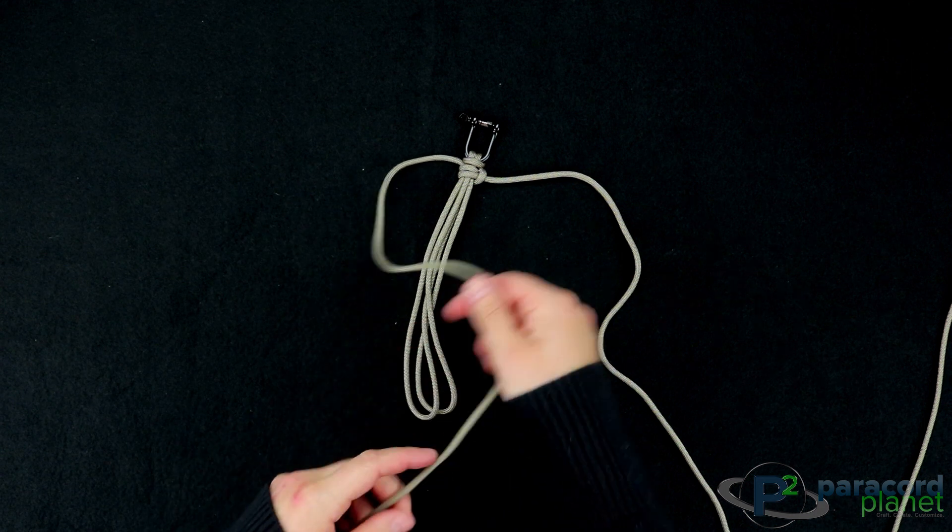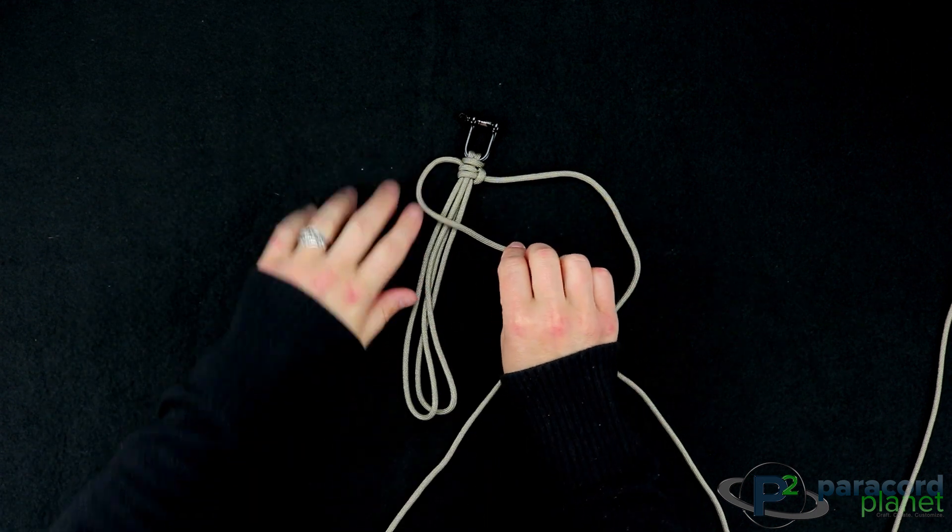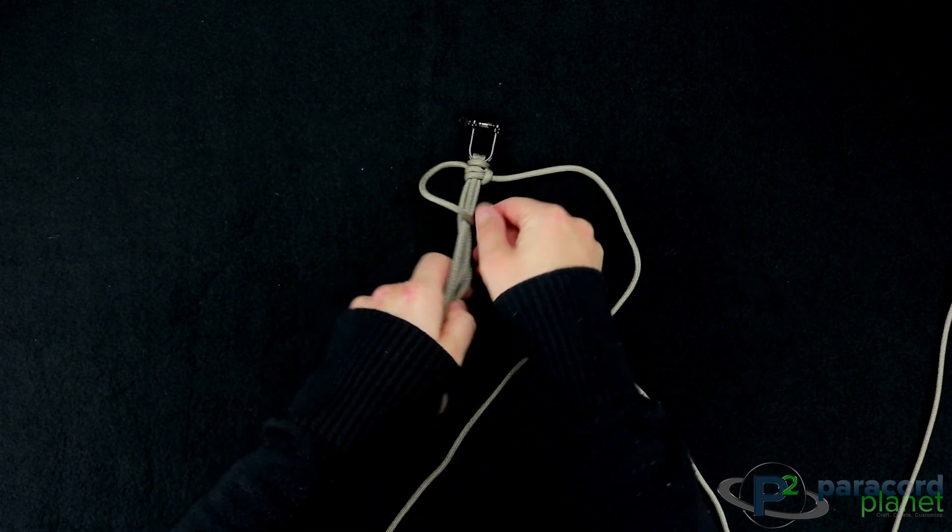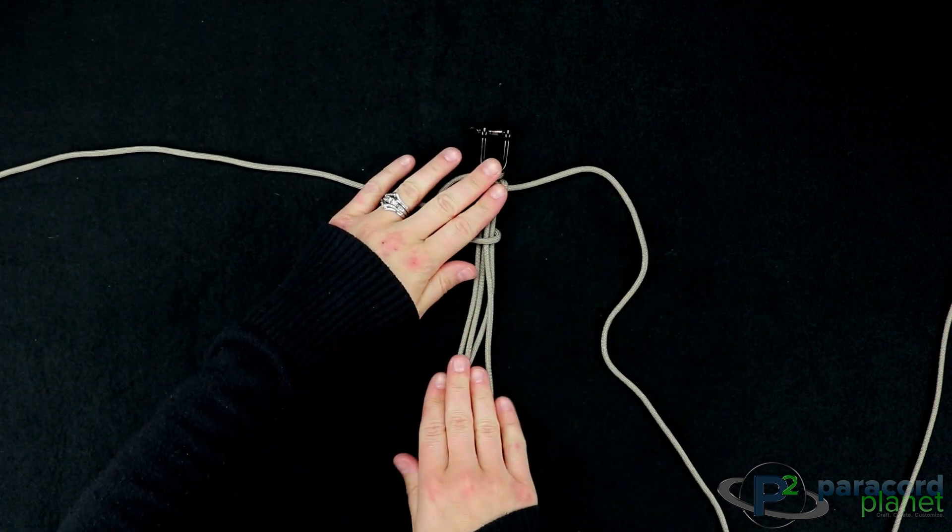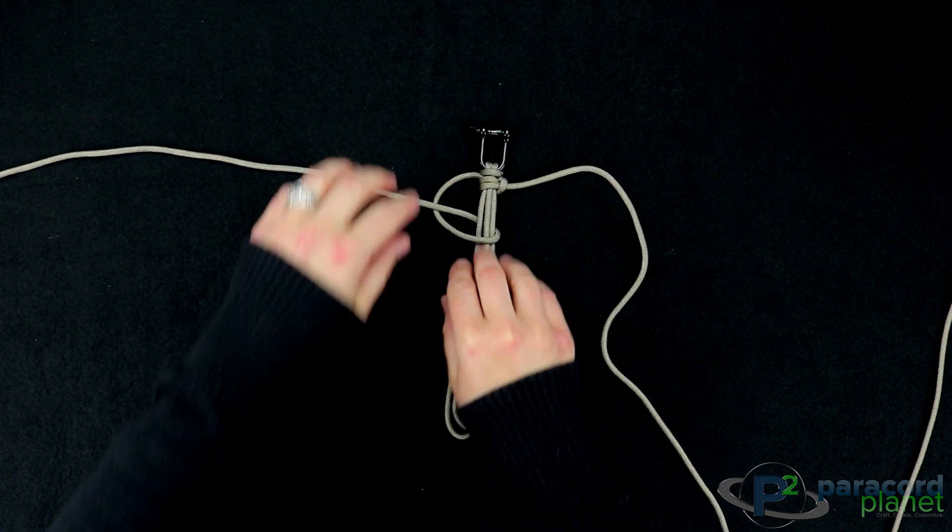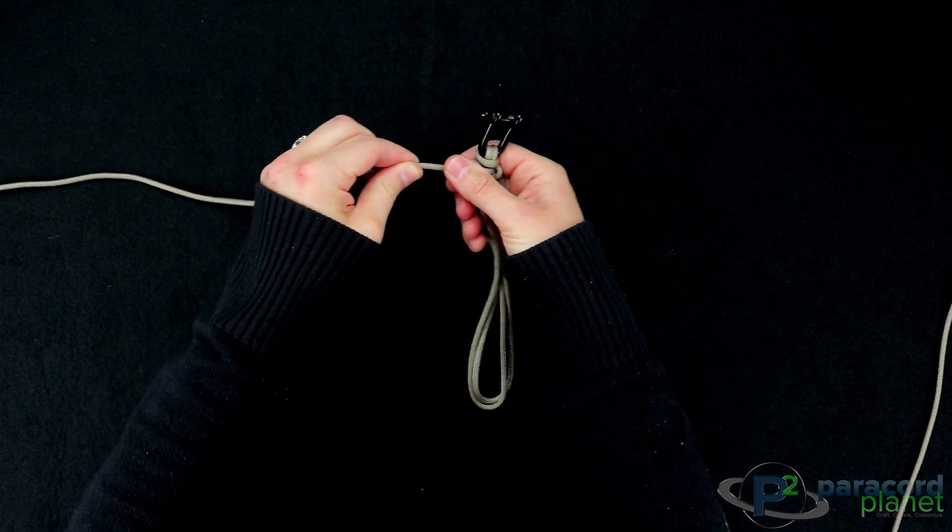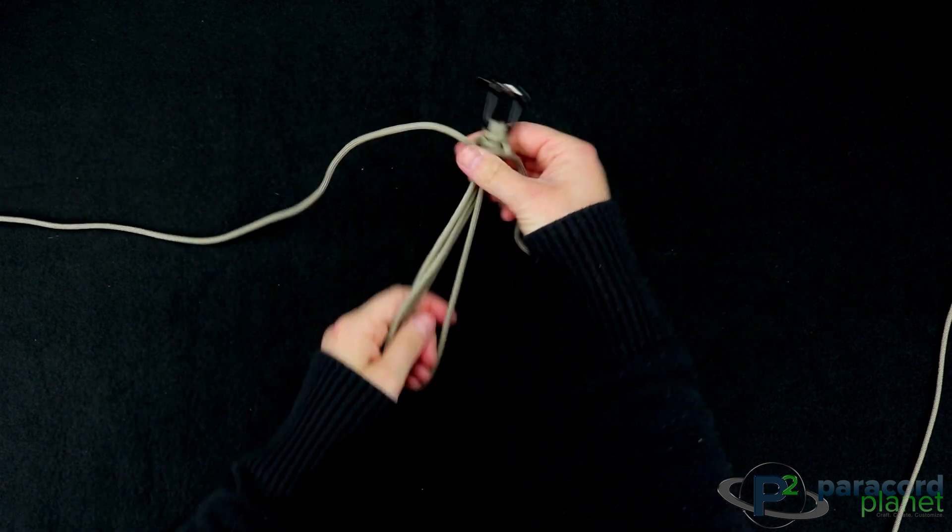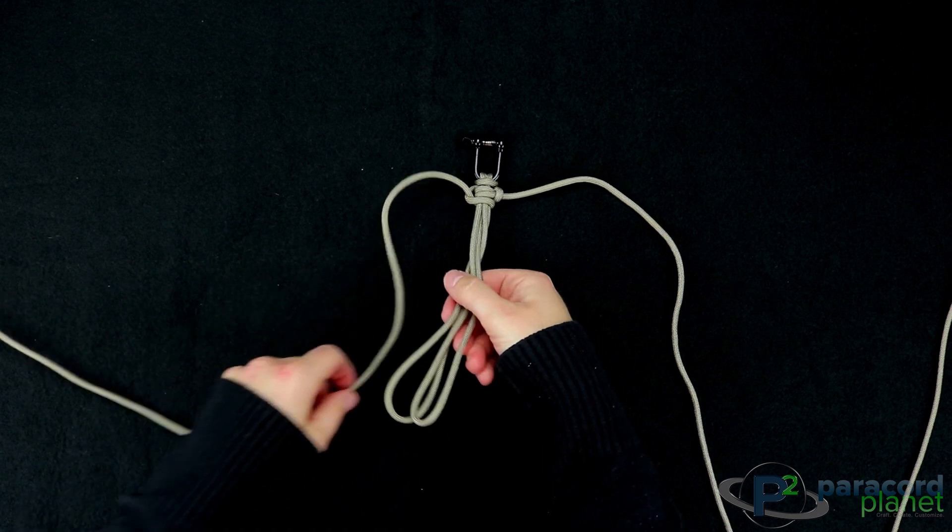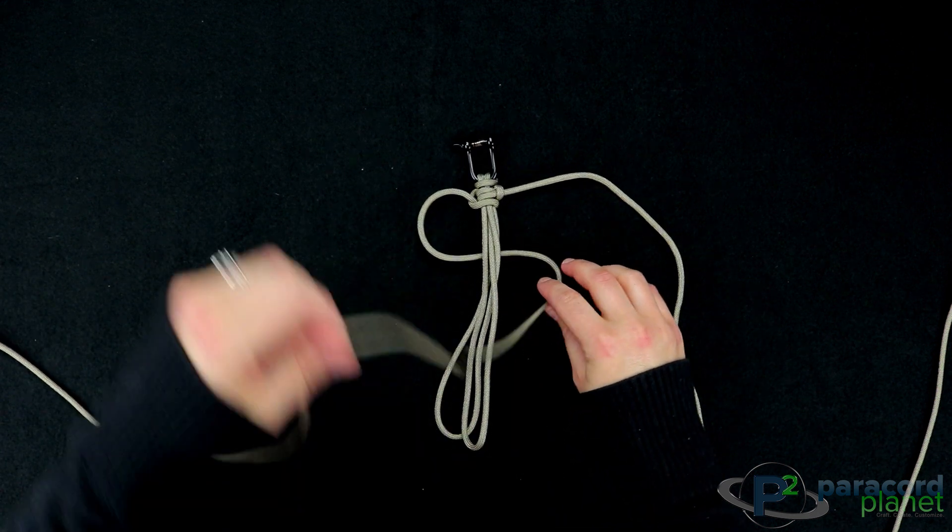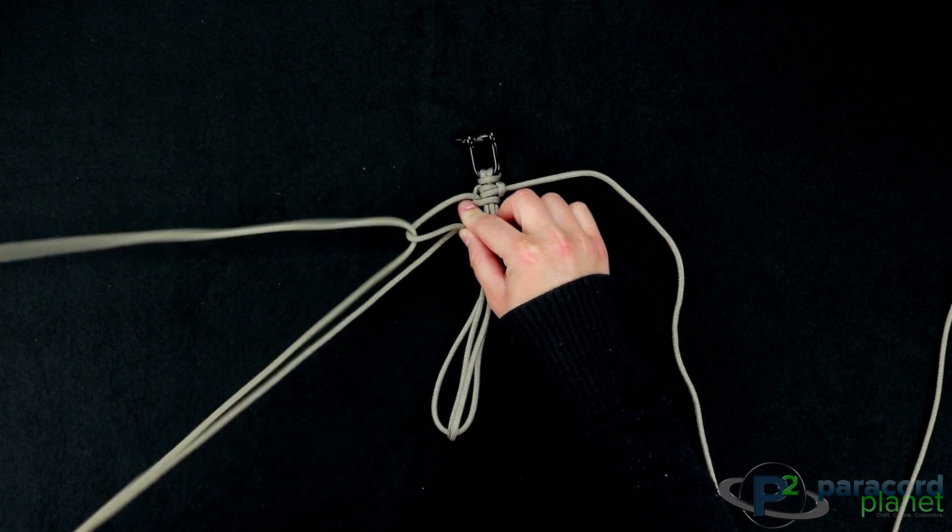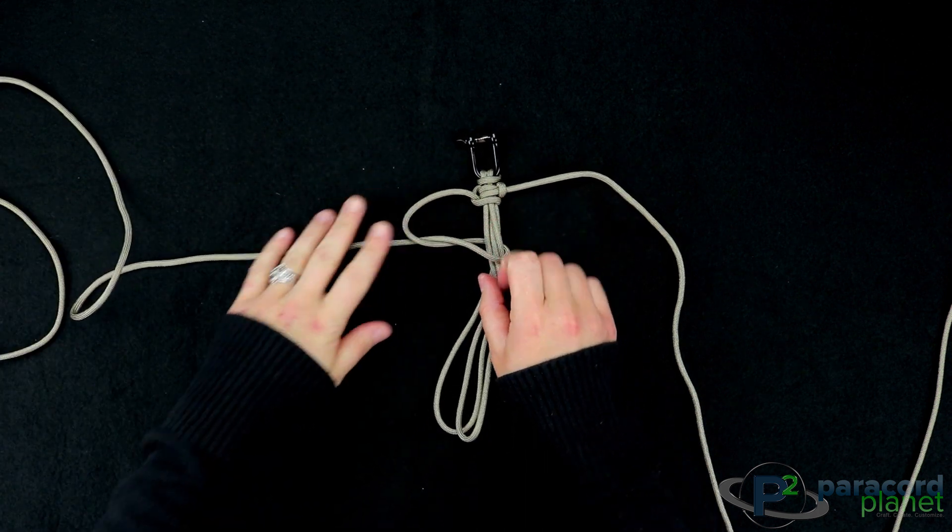Then you're going to do the same thing on the other side. You will go over, under your bracelet, and up through the loop. Pull that tight. And then you will go under and form a loop, and then down through that like that and pull it tight. And that formed your second half hitch.